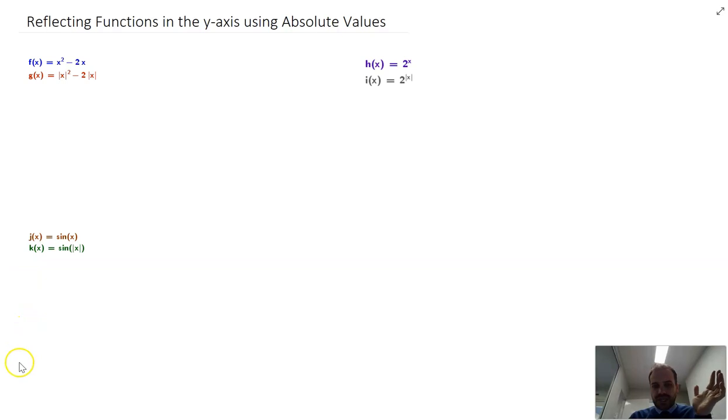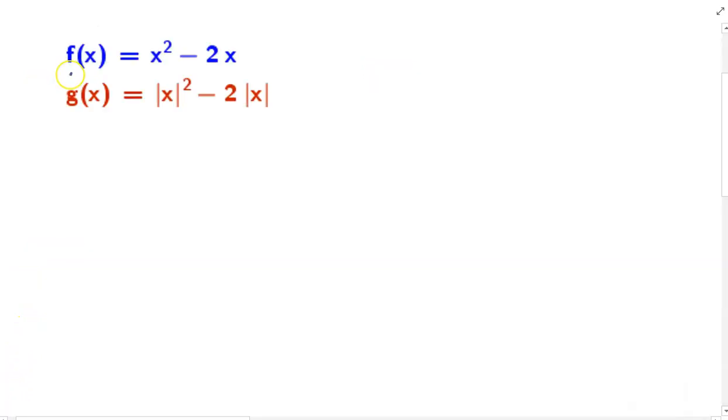Now in function notation, we can show this pretty easily. This function here is just straight up f of x. And we can say that this new function, g of x, is equal to f of the absolute value of x.